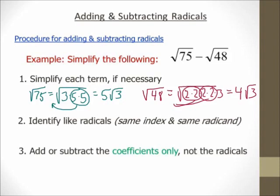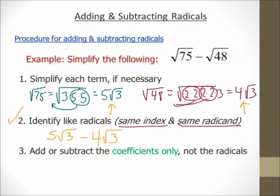Step number two: identify like radicals. It's kind of like like terms, but instead of dealing with x's and y's, I'm dealing with square roots and cube roots. A like radical has the same index and the same radicand. Looking at what I simplified to — 5 square root of 3 and 4 square root of 3 — they have the same index of 2 and the same radicand of 3. So they are like radicals.